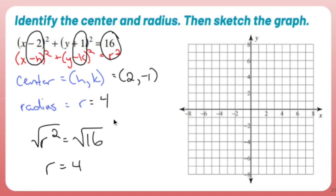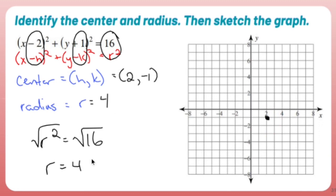Drawing these is always tough for me because of the pen and tablet thing that I use, but we'll see what happens. The center is right two, down one — that's my center right there. My radius is four units away.